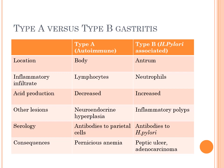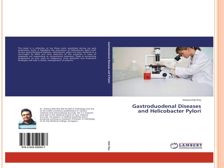To summarize the differences between Type A and Type B gastritis: location — Type A is mainly the body, Type B is in the antrum. Inflammatory infiltrate — Type A has lymphocytes, Type B has neutrophils. Acid production — decreased in Type A, increased in Type B. Other lesions — neuroendocrine hyperplasia in Type A, inflammatory polyps in Type B. Serology — antibodies to parietal cells in Type A, antibodies to H. pylori in Type B. Consequences — pernicious anemia in Type A, peptic ulcer or adenocarcinoma of the stomach in Type B.